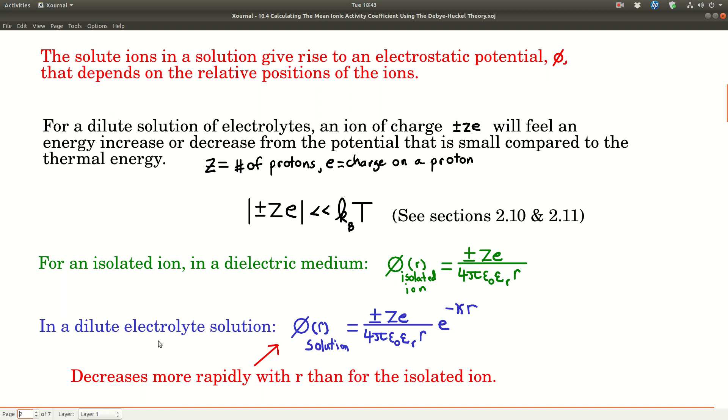We're going to start by talking about the electrostatic potential, phi, for solute ions in a solution. That phi is going to depend upon the relative positions of the ions.